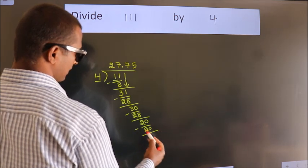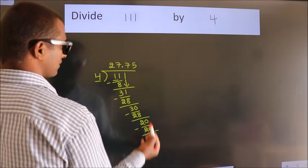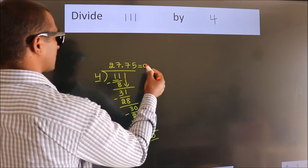Now we subtract. We get 0. We got remainder 0. So this is our quotient.